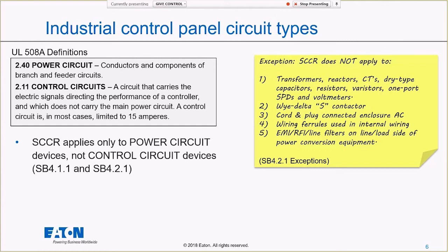A control circuit is usually at a different voltage and is generally limited to 15 amps — things like turning a contactor on or off. It's really important we can identify whether something is in the power circuit or the control circuit. The definitions don't mention voltage specifically; what determines a power circuit is whether it feeds an external load.